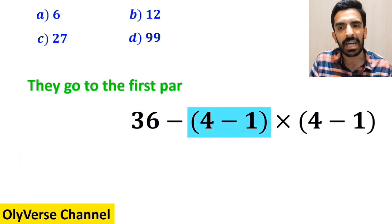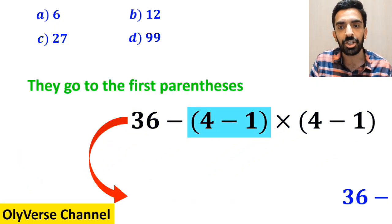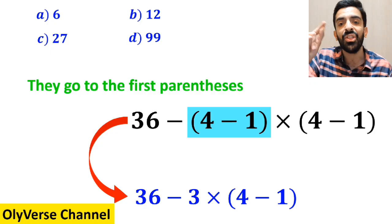Then, they go to the first parenthesis, and instead of this expression, they write 36 minus 3, then times 4 minus 1 inside the parenthesis.